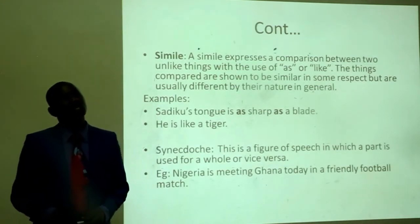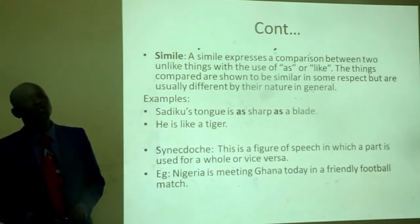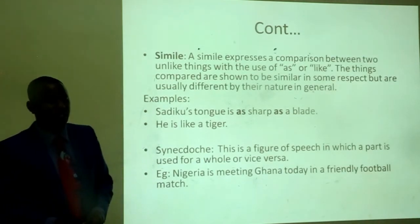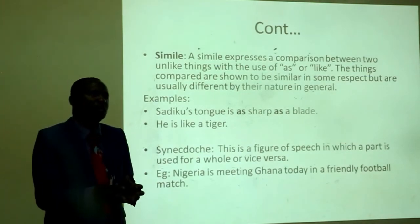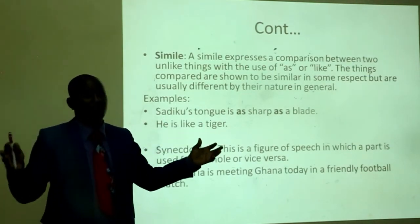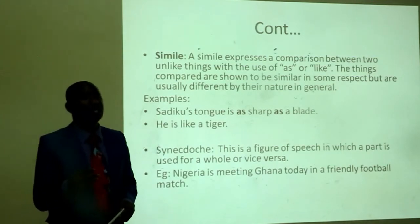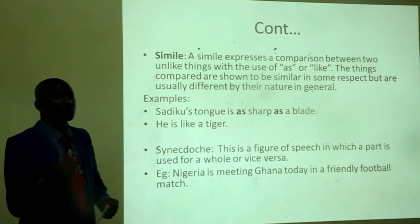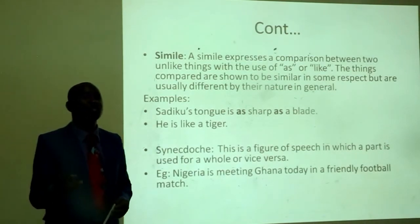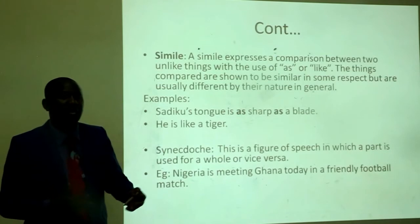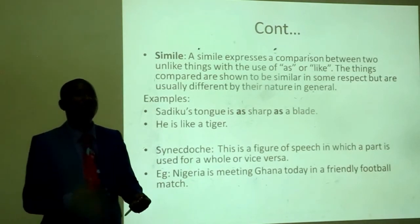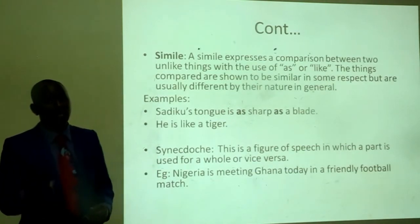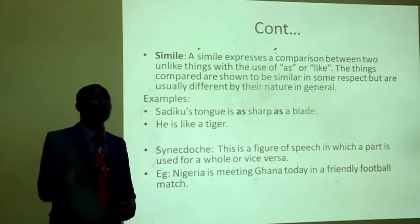We have synecdoche. Synecdoche is a figure of speech in which a part is used for a whole or vice versa — that means something small represents something big. For example, when two football clubs from two different countries are in contest, one may say 'Nigeria is meeting Ghana today in a friendly football match.'